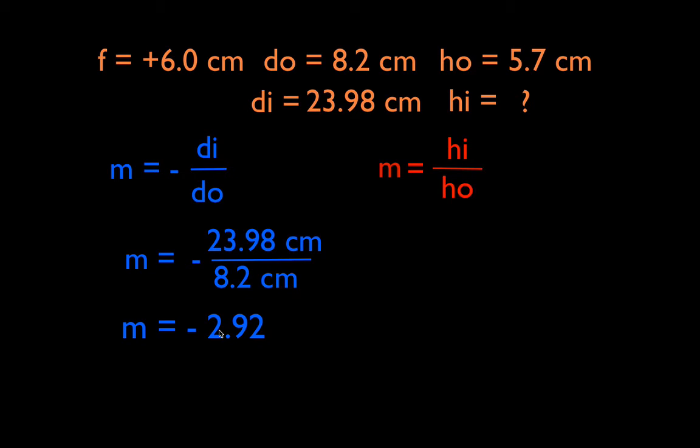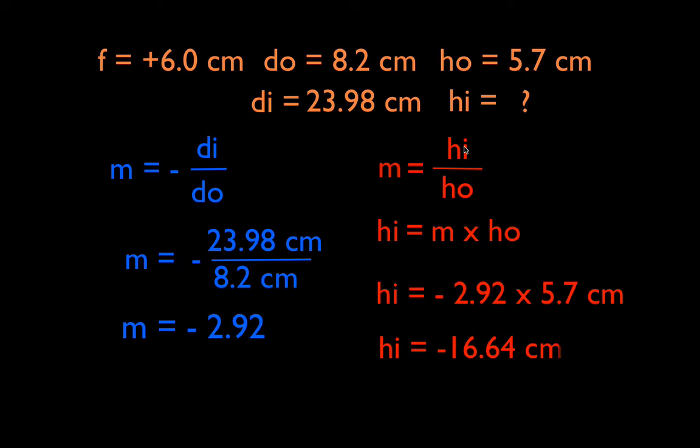Now we can use the other magnification equation to get the actual image height because this one has the image height in it. Magnification equals hI over hO. Solving for hI, plug the numbers in: hI is equal to minus 2.92 times 5.7. We get the image height is minus 16.4. That minus sign tells us the image is inverted, and this is bigger. So that makes us feel good because we know that our image is going to be bigger and it's going to be upside down as it should be.